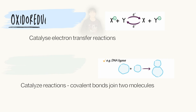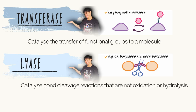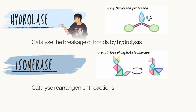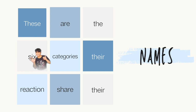We have oxidoreductases and ligases. We also have transferases and lyases. We also have hydrolases, and lastly isomerases. These are the six categories.